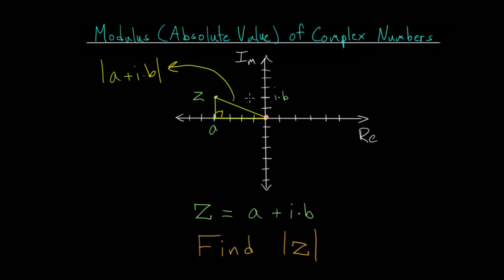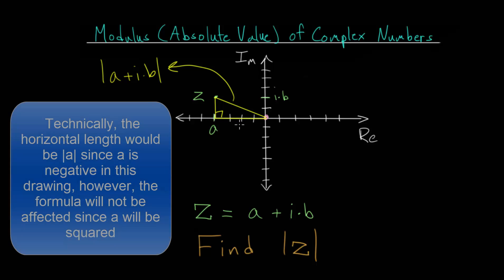We are trying to find the length of the hypotenuse. So if we know the lengths of the vertical and horizontal components, then we can use the Pythagorean theorem to figure out the length of this hypotenuse. The components of this right triangle, the horizontal is a units long, and the vertical is b units high.